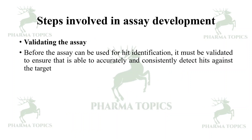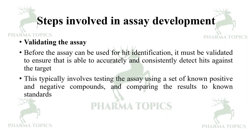Validation of the assay: before the assay can be used for hit identification it must be validated to ensure that it is able to accurately and consistently detect hits against the specified target. This typically involves testing the assay using a known set of positive and negative compounds and comparing the results to known standards. Using blank, negative control, and positive control gives you accuracy in determining whether the selected hit is working or not.